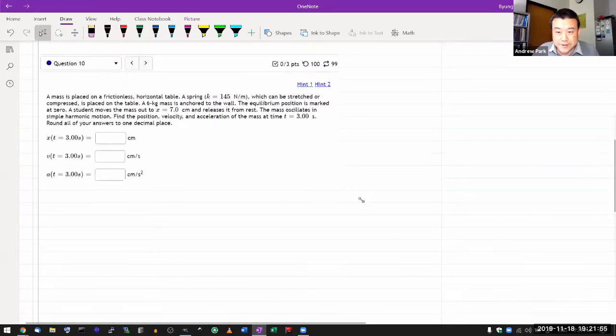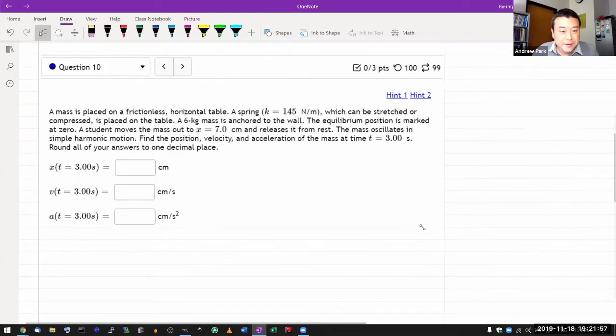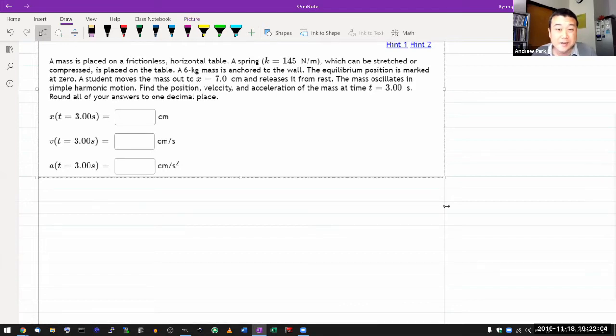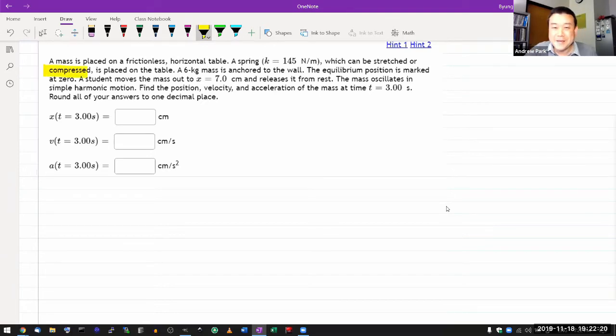Since this is an oscillation problem, a mass is placed on a frictionless horizontal table, making things easier. You don't have to deal with gravity or damping. A spring with given spring constant that can be stretched or compressed is placed on the table. A six kilogram mass is anchored to the wall. The equilibrium position is marked at zero.